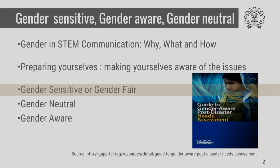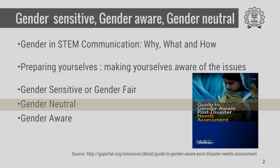The first step in preparing ourselves is to understand the difference between: number one, gender sensitive or gender fair; number two, gender neutral; and number three, gender aware. Gender sensitive means to understand that there are differences between men, women and third gender, and that there are discriminations and inequalities between people of different genders in society. Therefore, since human beings consist of all genders, how do we ensure that we are sensitive in addressing all of them in our communication?